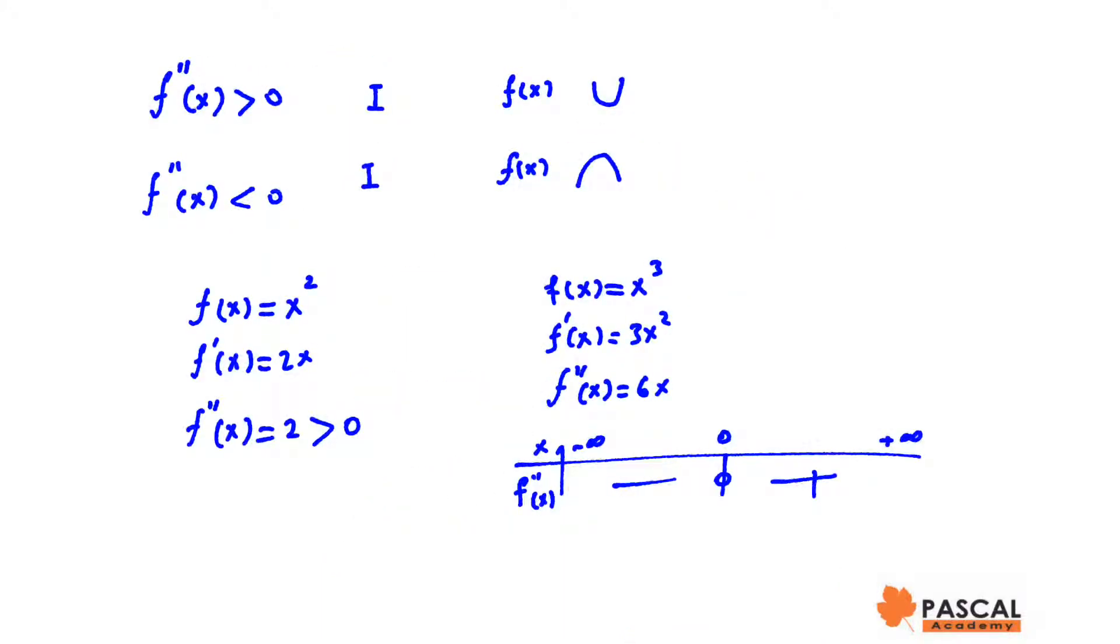It can be proved when the second derivative of a function is positive on interval i, f of x is concave up on i. And if it is negative, f of x is concave down.